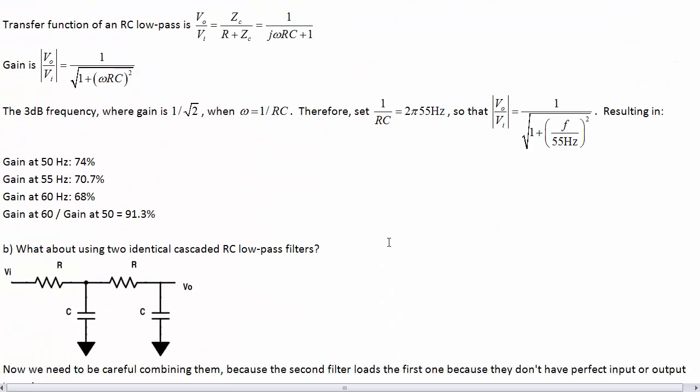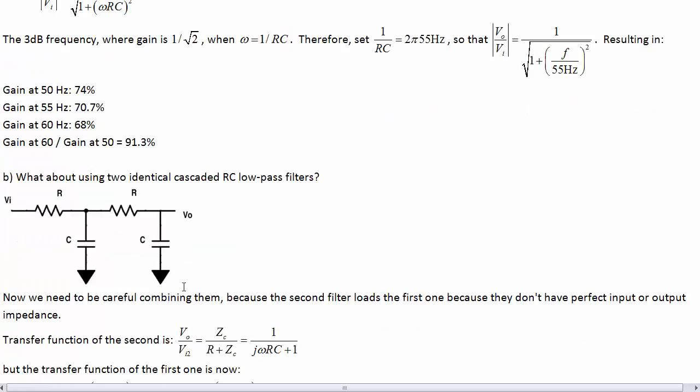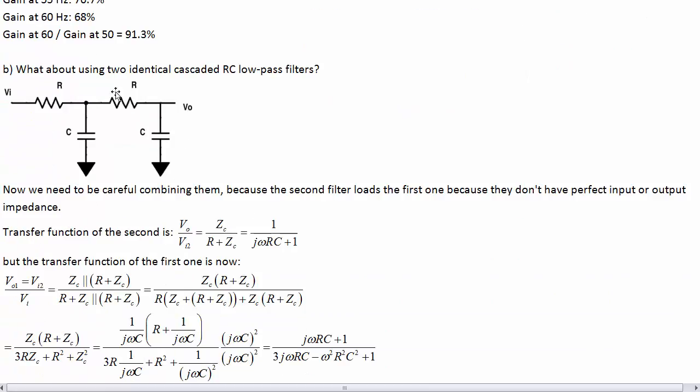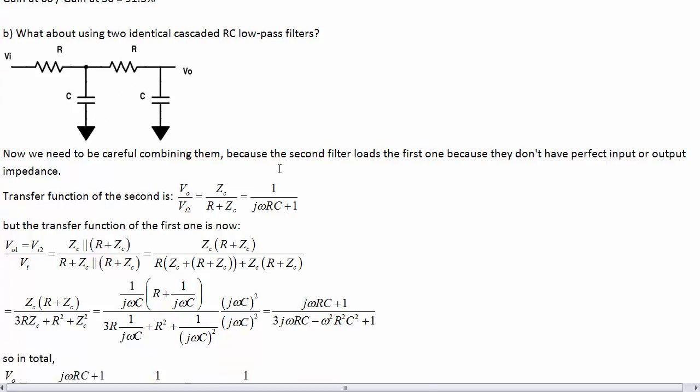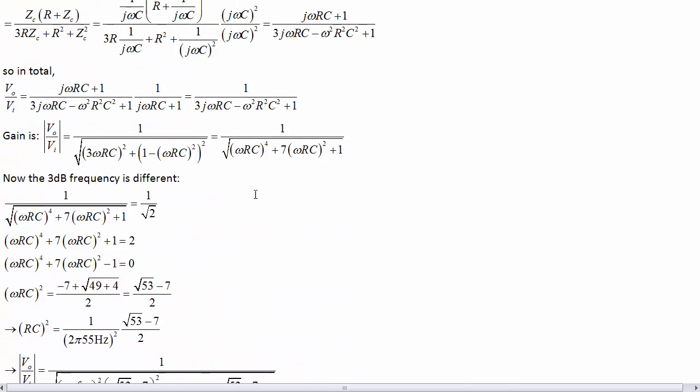So now let's look at some more advanced filters. What if we take two of these filters and we cascade them? Being careful to adjust the 3 dB frequency. As you can see, it's complicated because this loads this filter. So the first filter now, its voltage here is based on a divider between this resistor and then this in parallel with these two, as you know.